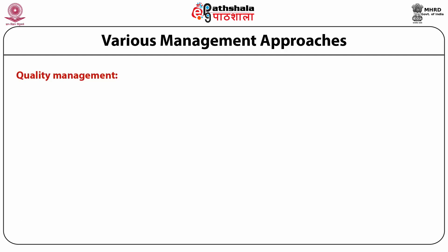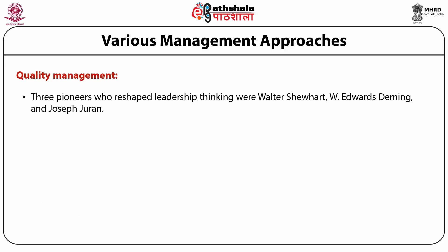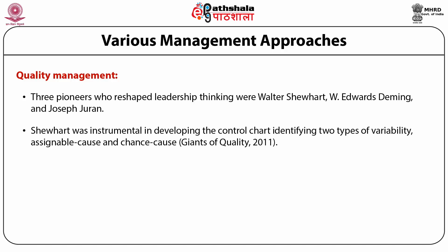Quality management pioneers who advanced leadership thinking were Walter Shewhart, W. Edwards Deming, and Joseph Juran. During the 1920s, Shewhart was working for the Western Electric Company when he developed the concept behind statistical process control to identify variation in a process that was outside the normal tolerance range. Shewhart was instrumental in developing the control chart, identifying two types of variability: assignable cause and chance cause. Chance cause is minor and difficult to detect, whereas assignable cause can be easily detected when variability is outside the standard control level and action is required to identify the root cause and eliminate the variation.